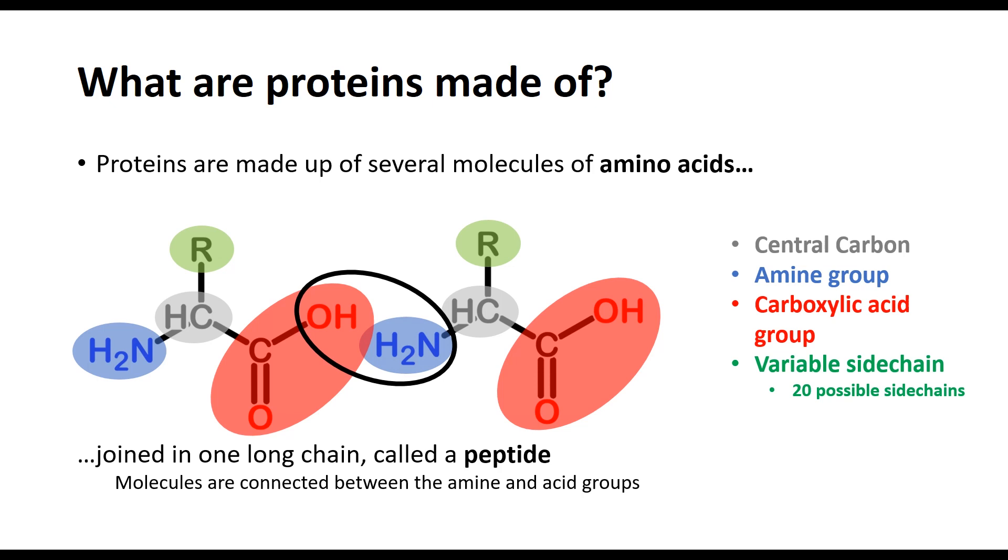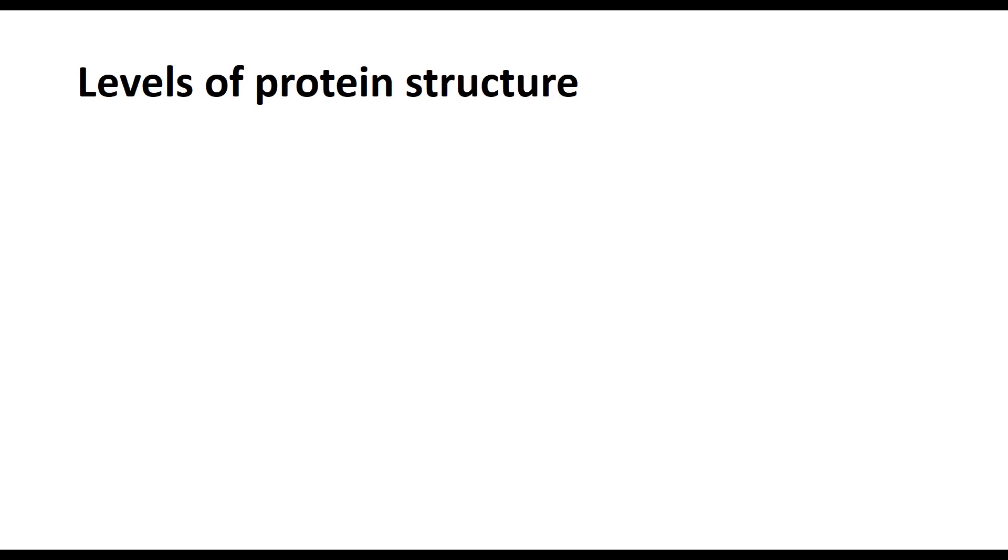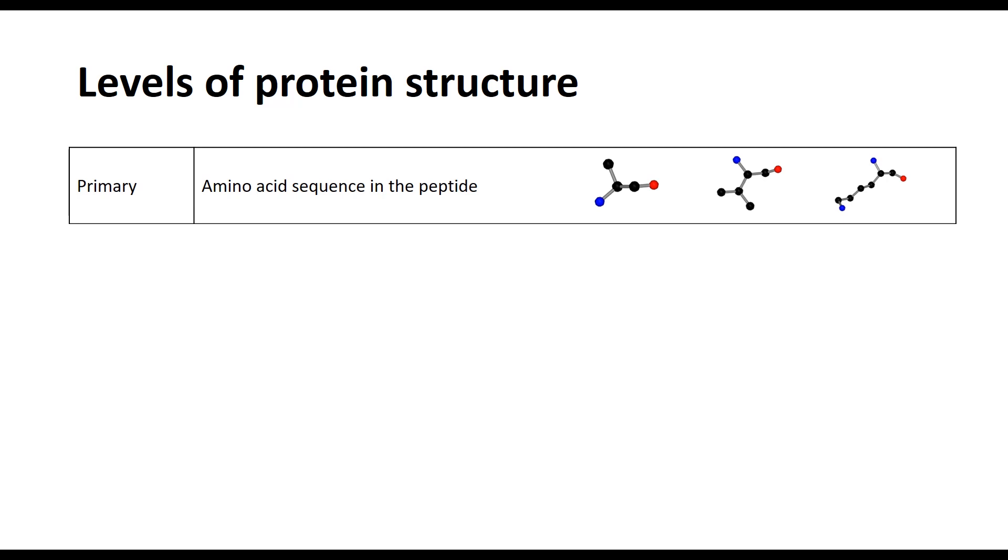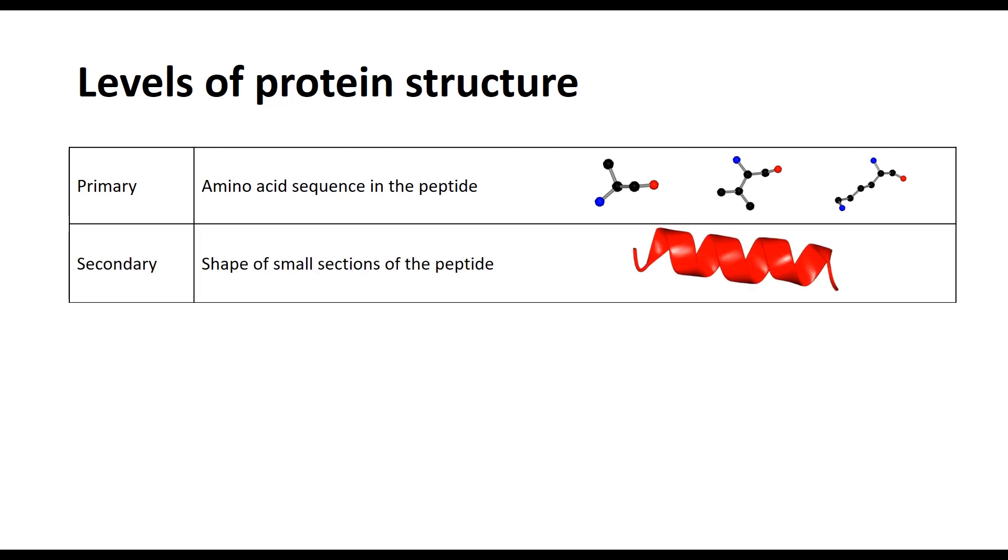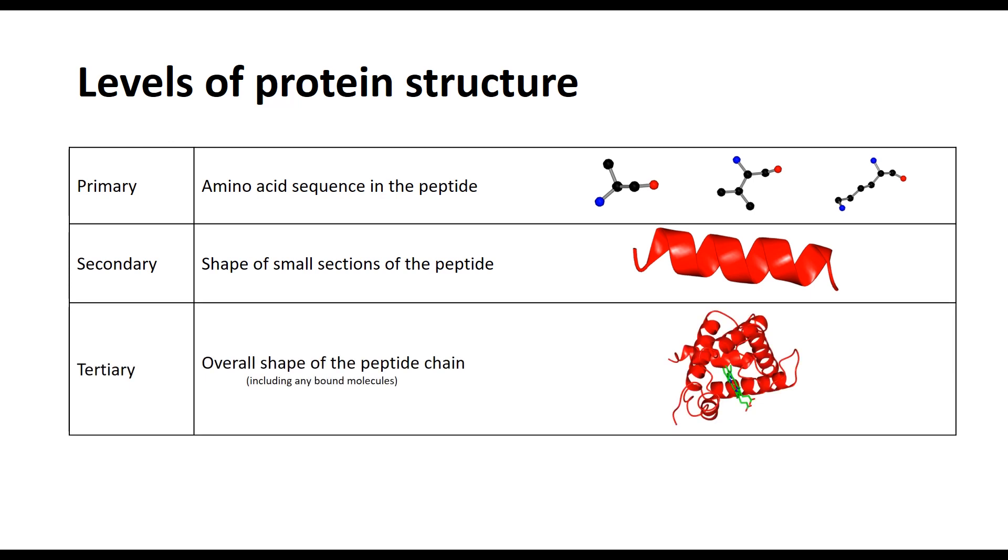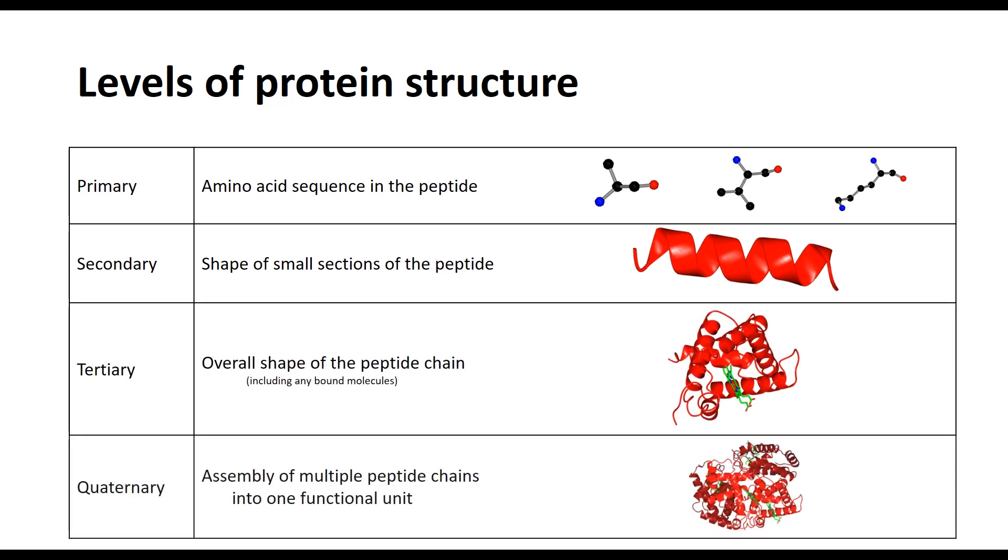So now that we know what proteins are made of, there are four levels of structure that proteins can have. The first level, or primary structure, relates directly to the amino acid molecules that we were just looking at, and it's the order that the different amino acids are linked in in the peptide chain. The secondary structure is the interactions between the amino acids in the chain, forming small stable structures throughout the peptide chain. The tertiary structure is the overall 3D shape of the finished peptide, with the quaternary structure being the interaction between multiple peptide chains to form one functional unit.